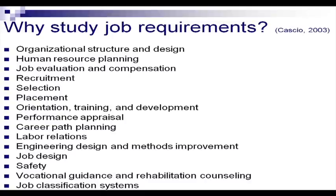Then comes selection — how do we find out who can do the job we need them to do. Orientation, training and development: once we take employees into our organization, we need to tell them about the organization, help them become comfortable in their workplace, help them learn how to do what we need them to do, train them in essential activities, and help them develop their skills so that personal goals can be met through organizational goals.